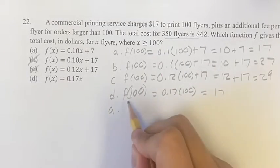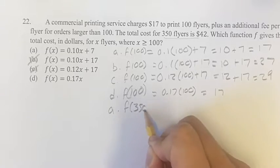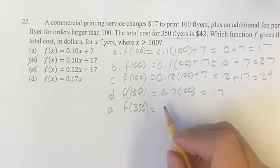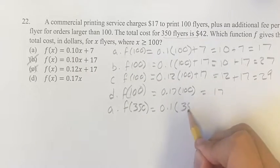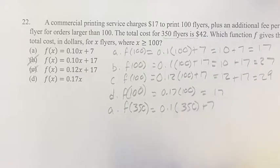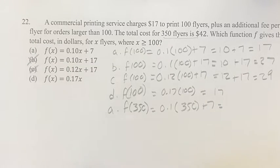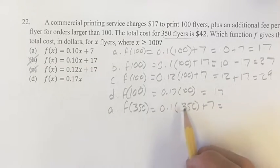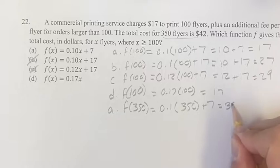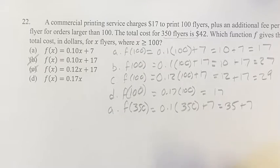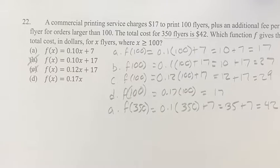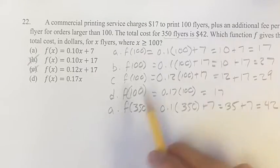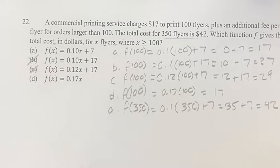Let's try that out. For A, f(350) equals 0.1 times 350 plus 7. What is that going to be? 0.1 times 350 is 35, plus 7 equals 42. That is what we're looking for. So we know the answer is A because there's no more information that could discredit A.